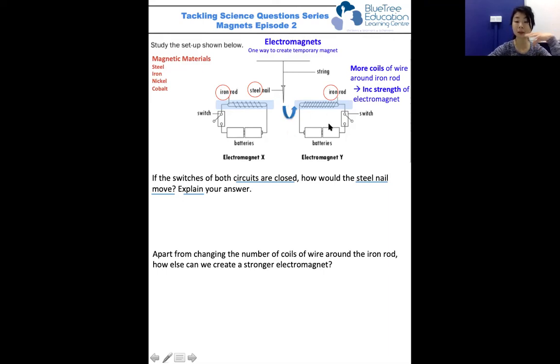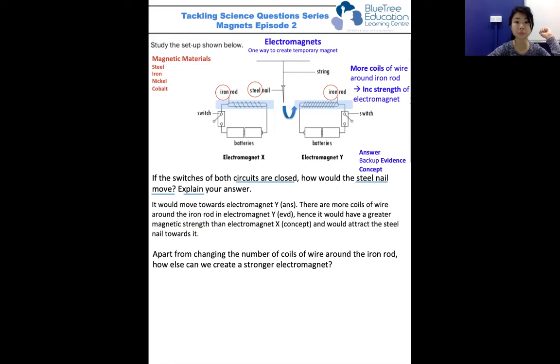Let's use the ABC technique to explain our answer. The steel nail will move towards electromagnet y. The evidence from the diagram is that there are more coils of wire around the iron rod in electromagnet y, which makes it a stronger magnet with greater magnetic strength, and it would attract the steel nail towards it.